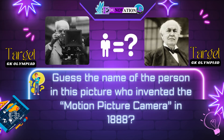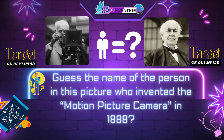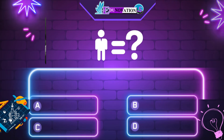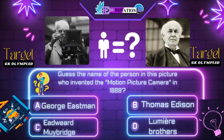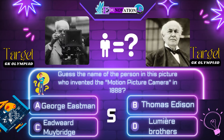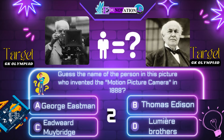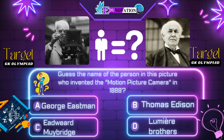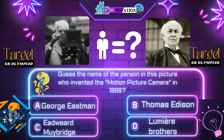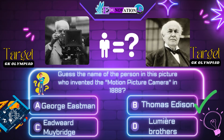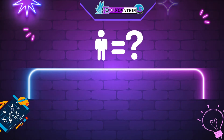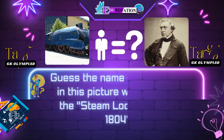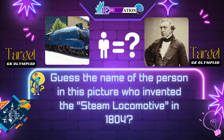Next question. Guess the name of the person in this picture who invented the motion picture camera in 1888. Your options are: A. George Eastman, B. Thomas Edison, C. Edward Muybridge, D. Elias Howe. Time's up. Correct answer is B. Thomas Edison.